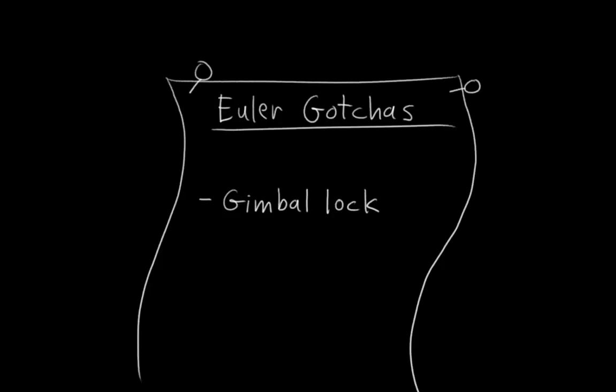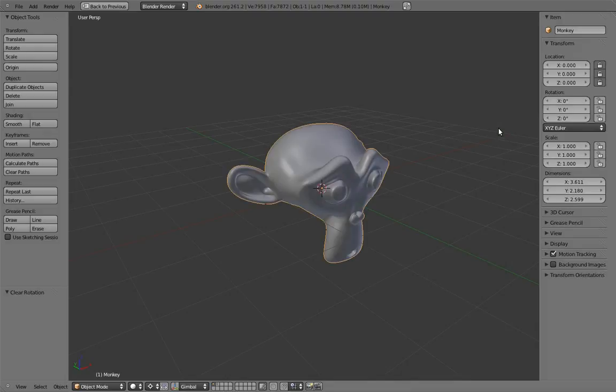But to understand gimbal lock, we first need to cover a different gotcha, which is that the meaning of the Euler axes actually change with different rotations. To better explain this, let's switch over into Blender and take a look at how Eulers work on this monkey head.